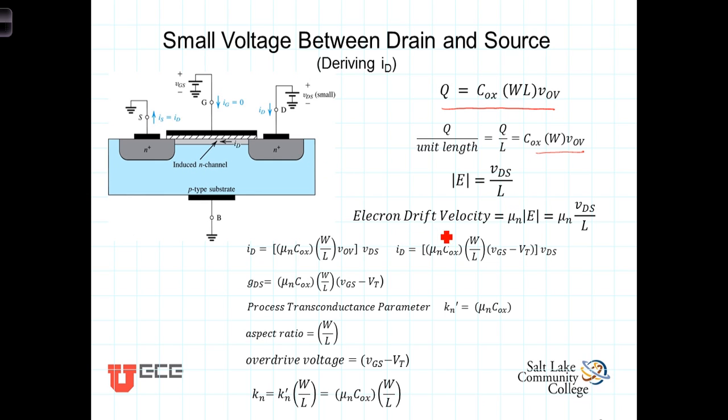Now, the electron drift velocity, the velocity at which the electrons are flowing through the channel, can be found by taking the mobility of the electrons in the doped semiconductor times the strength of the electric field E, or that's mu sub N times VDS over L.